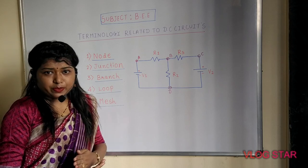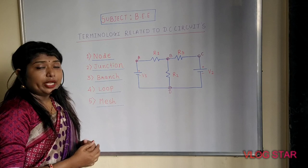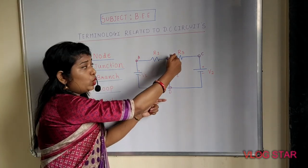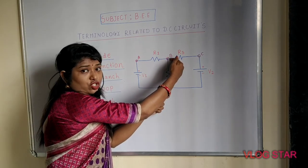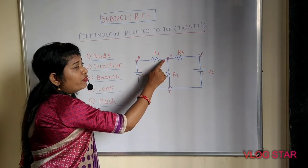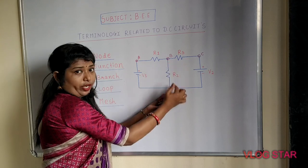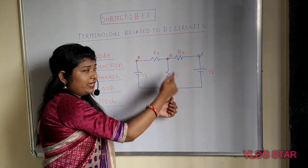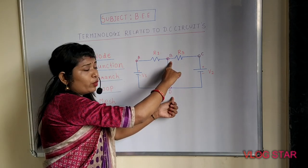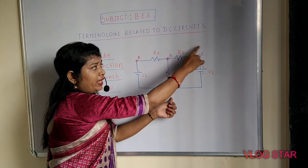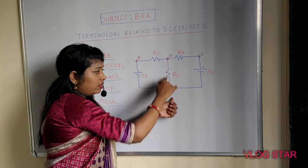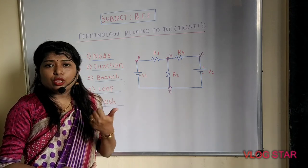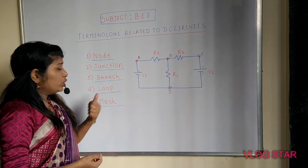Coming to the third important term — branch. To understand the concept of branch, you have to concentrate on two junction points. With the help of these two junction points, you formulate the branches. The first branch is B-A back to D, the second branch is B-C-D back to B, and the third branch is B-D itself. You can easily identify node, junction, and branches in the circuit.